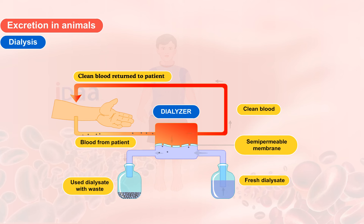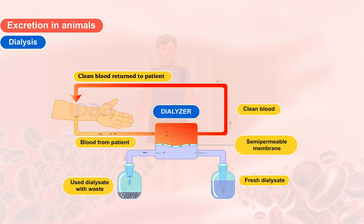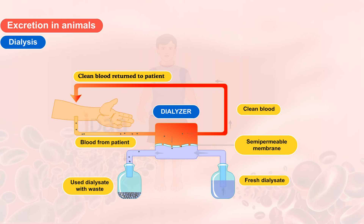Dialysis. Blood is filtered during excretion by the kidneys. If there is a failure in the functioning of kidneys, it would be harmful for the person, as waste products start accumulating in the body. In such cases, blood is filtered artificially, and this process is called dialysis.